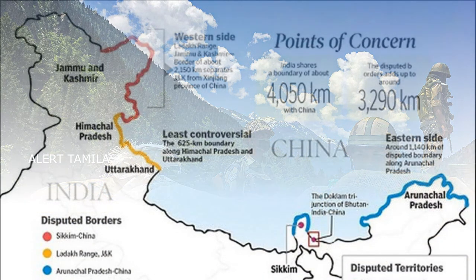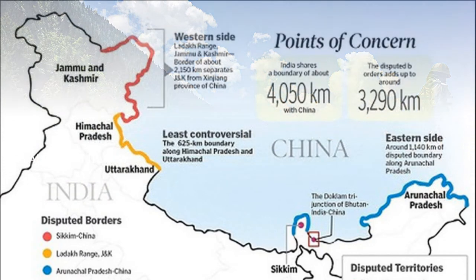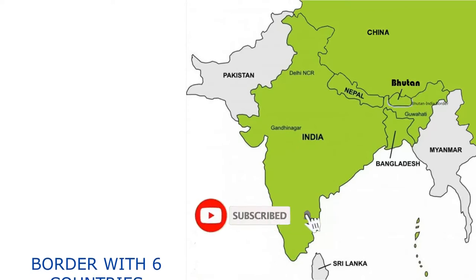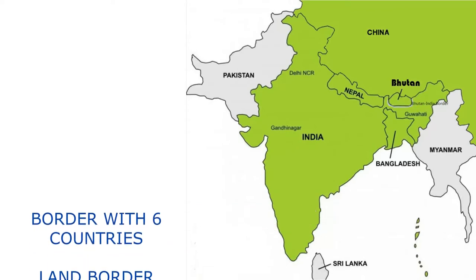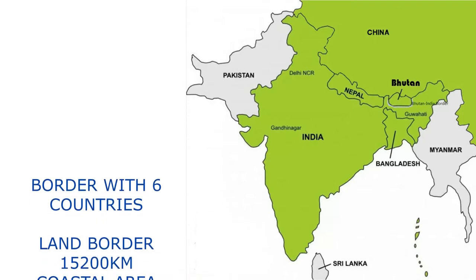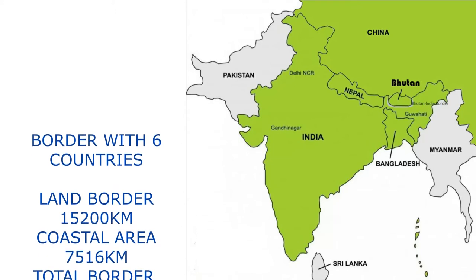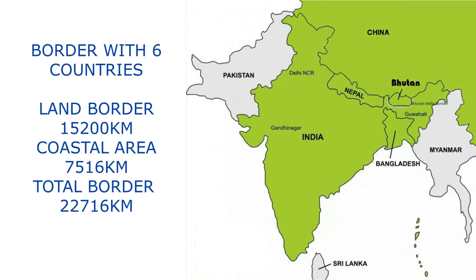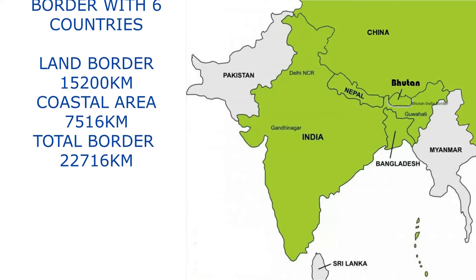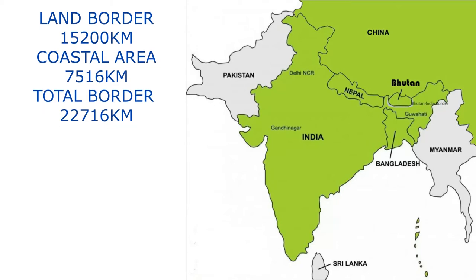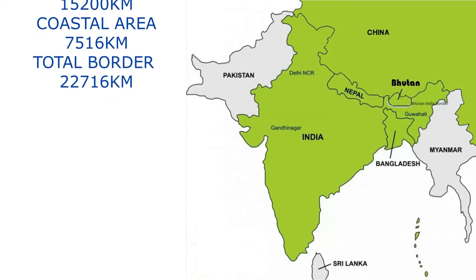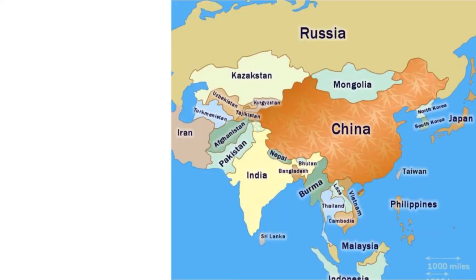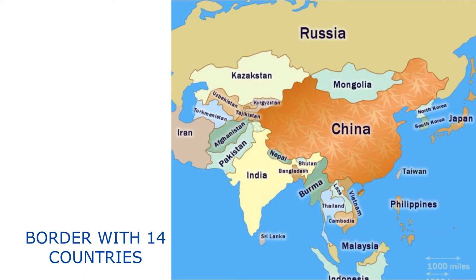India and China have a wide range of 265 km. This is the most important part of India. In India, there are 6 countries. The coastline is in Sri Lanka. In India, there are 15,200 km. In India, there are 7,500 km and 8,500 km. If you go to the north side of India, there are 6,000 km. In China, there are 11 countries.